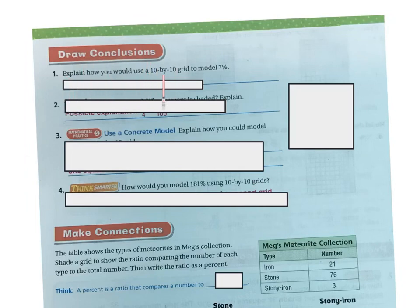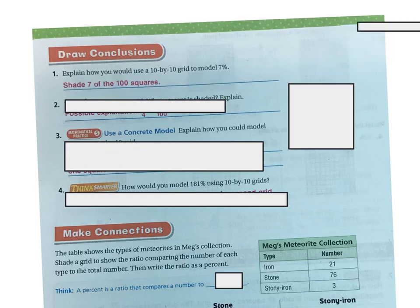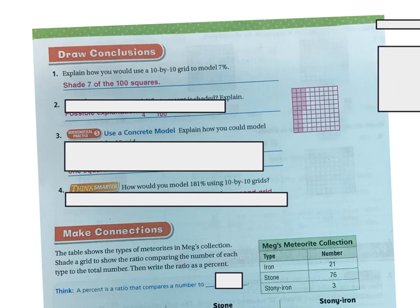Explain how you would use a 10 by 10 grid to model 7%. We just did three other problems, right? So you're going to shade 7 of the 100 squares because 7% is 7 of the 100.